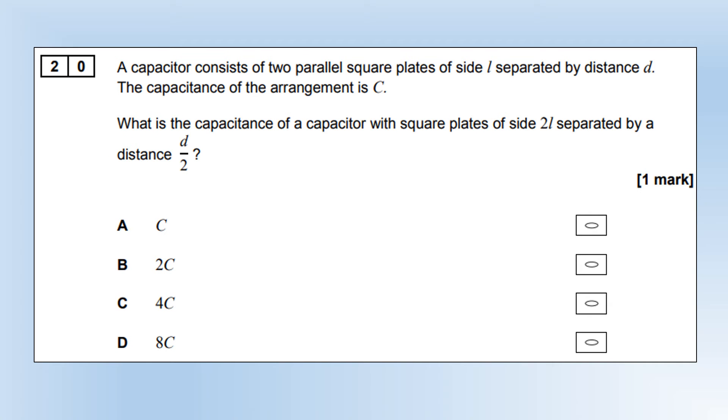A capacitor consists of two parallel square plates of side L separated by a distance D. The capacitance of the arrangement is C. What is the capacitance when the square plates have side 2L but the separation distance is D over 2? Using this equation, if you double the length, that's going to quadruple the area. If you halve the distance, that's going to double the capacitance. We end up with eight times the capacitance. So we want option D.